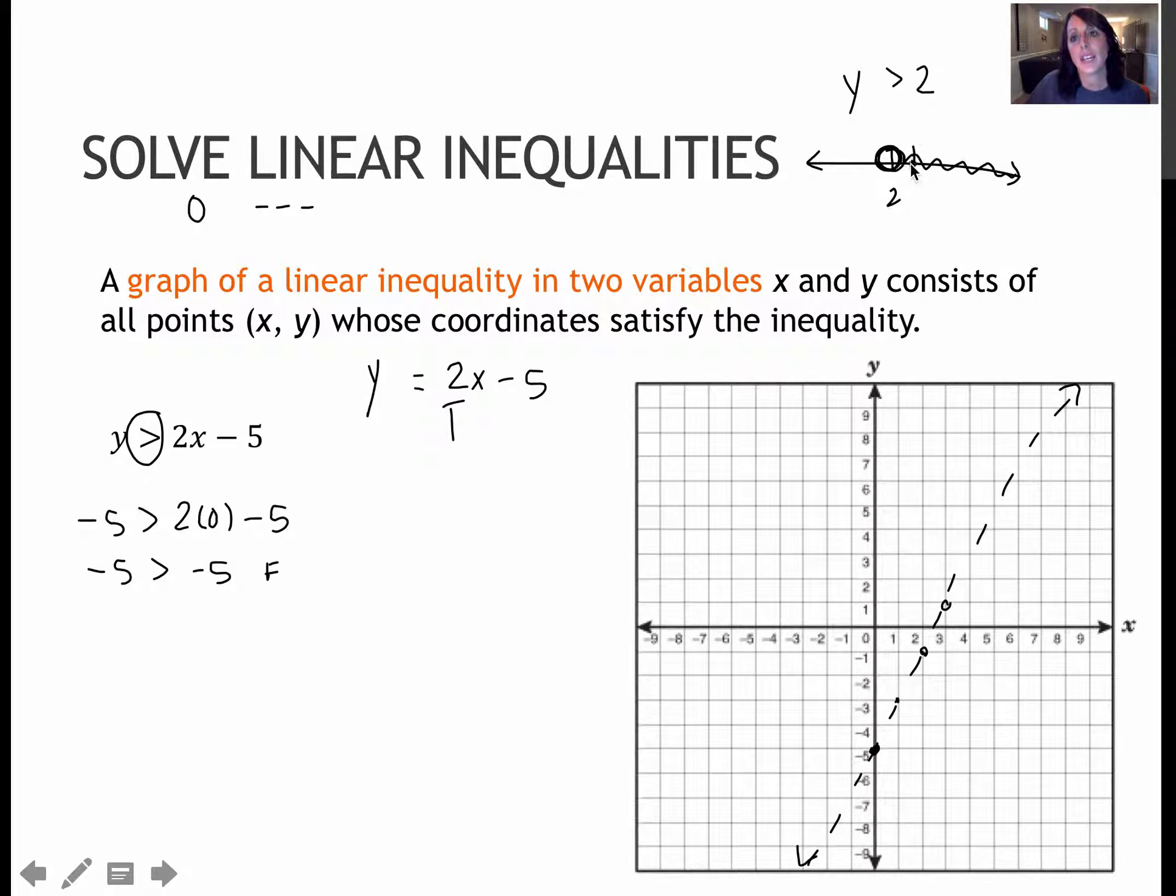Now from here, just like I did here and I looked for values that were greater than 2 and I shaded, I'm going to do the same process here, except I need to actually plug in a test point. So when I do this, you choose any point on the graph that's not already on the line. I prefer the point 0, 0, and I use it every time that 0, 0 is not located on my line.